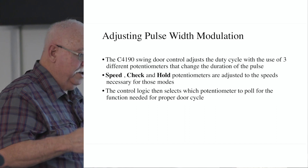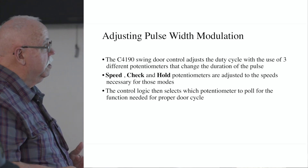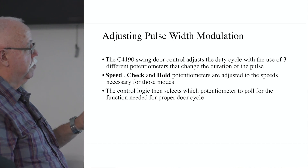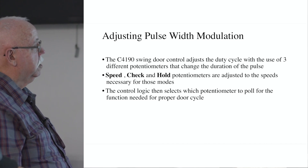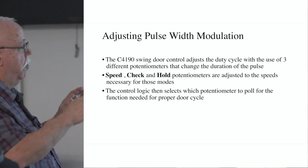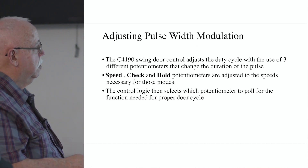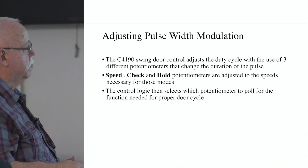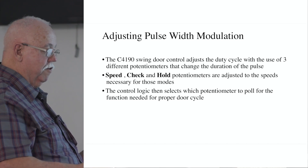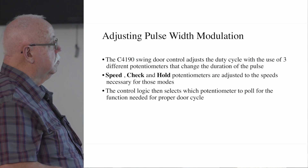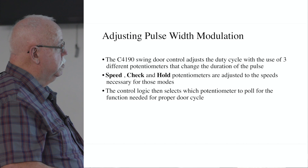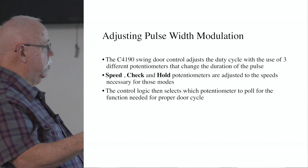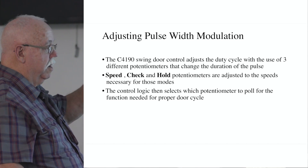How do you get from the pulse width to the control? The 4190 swing door control uses three different potentiometers that change the duration of the pulse — you've got open speed, open check, and hold — and they're adjusted to the speeds you want for that particular mode of operation. The control logic selects the speed that drives the door open until the open check switch trips, then changes to check speed, and when the door reaches full open position, a hold potentiometer holds it fully against the internal stop.